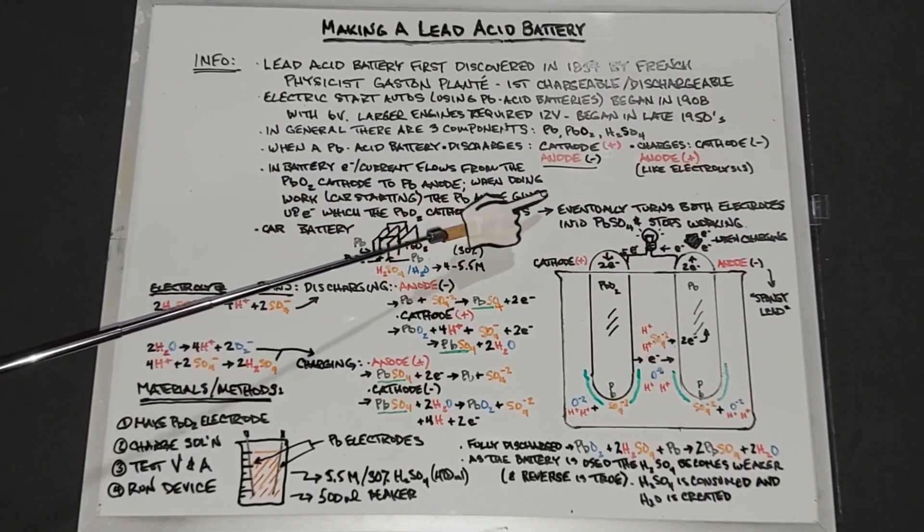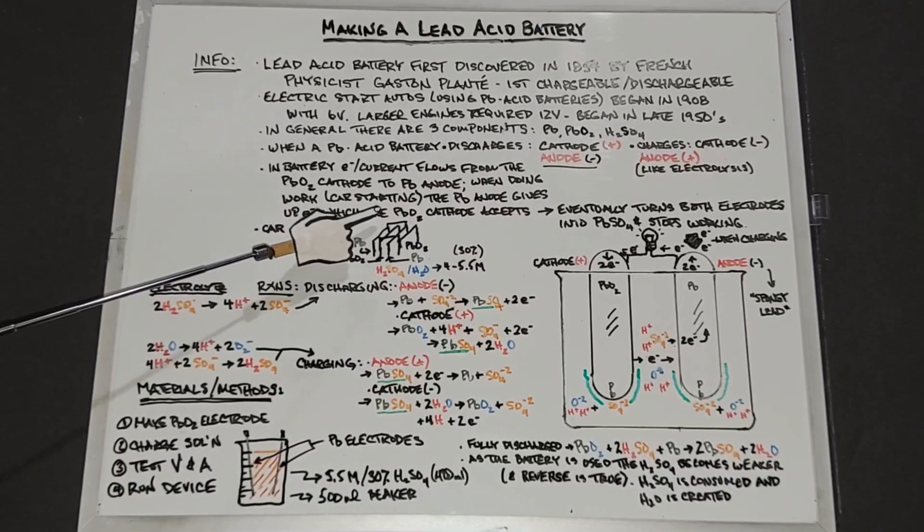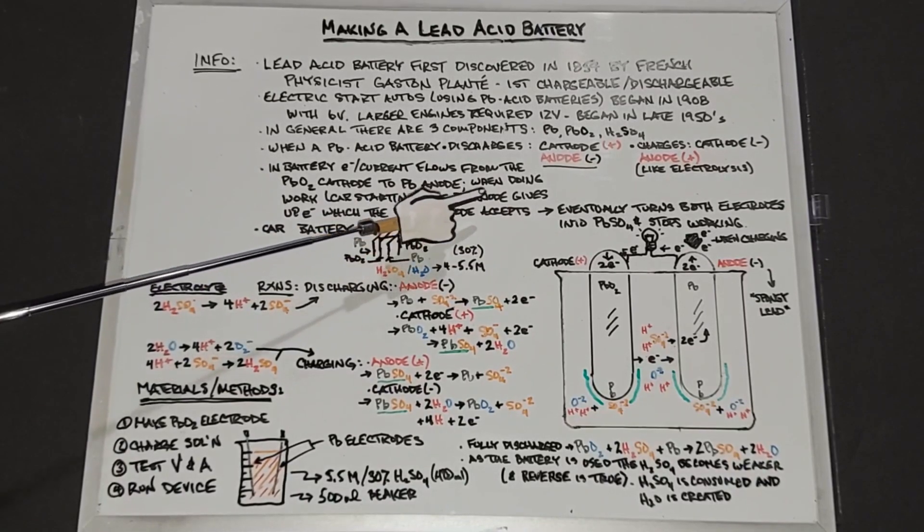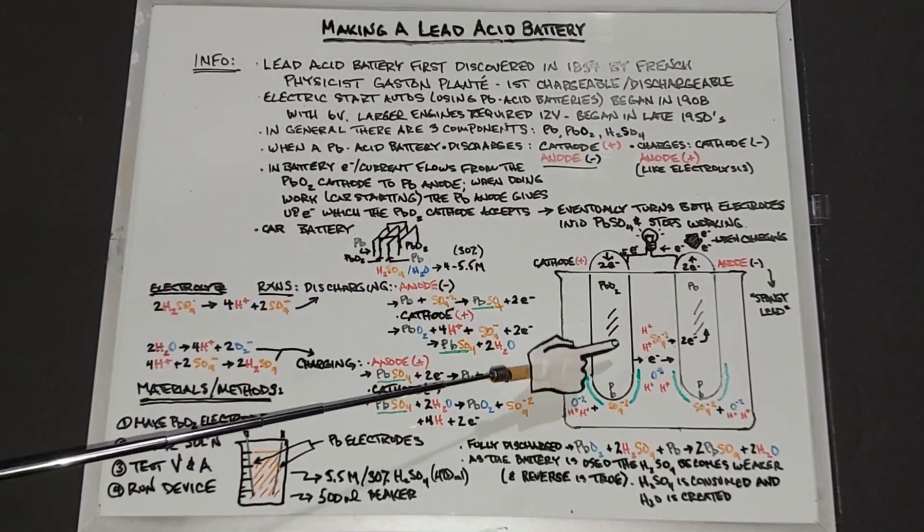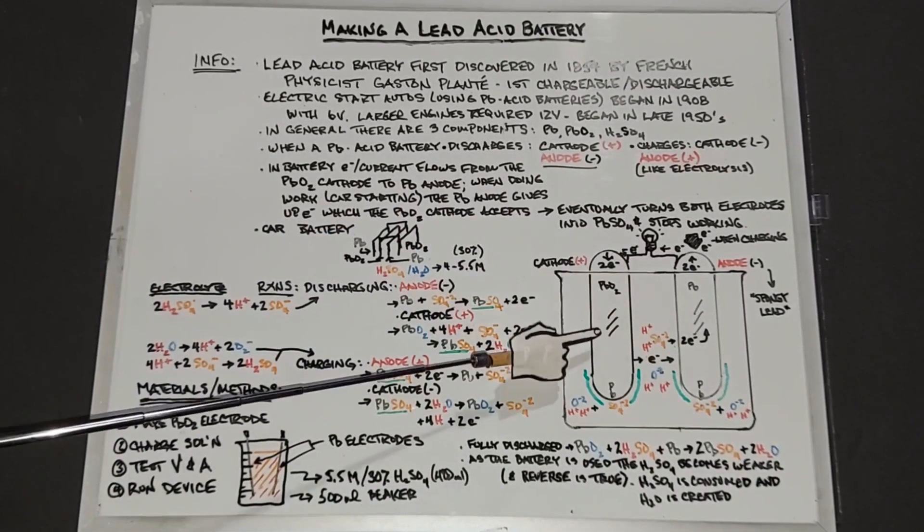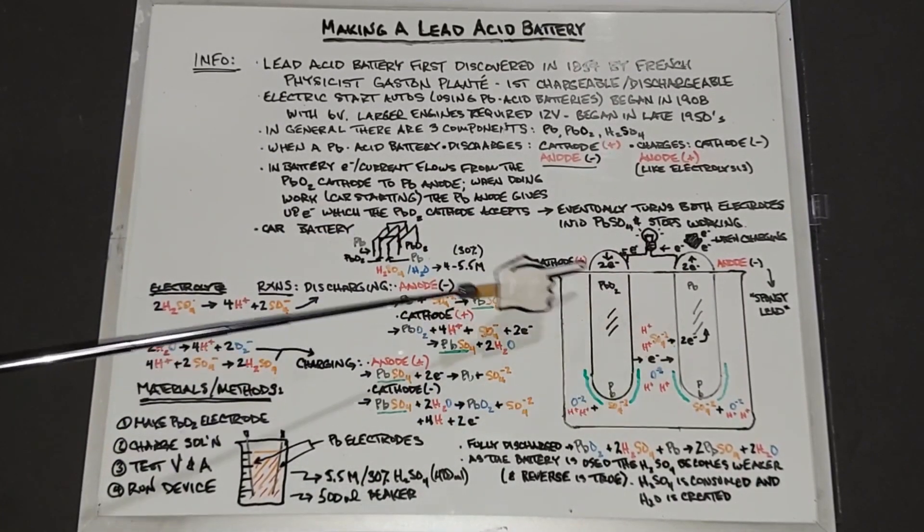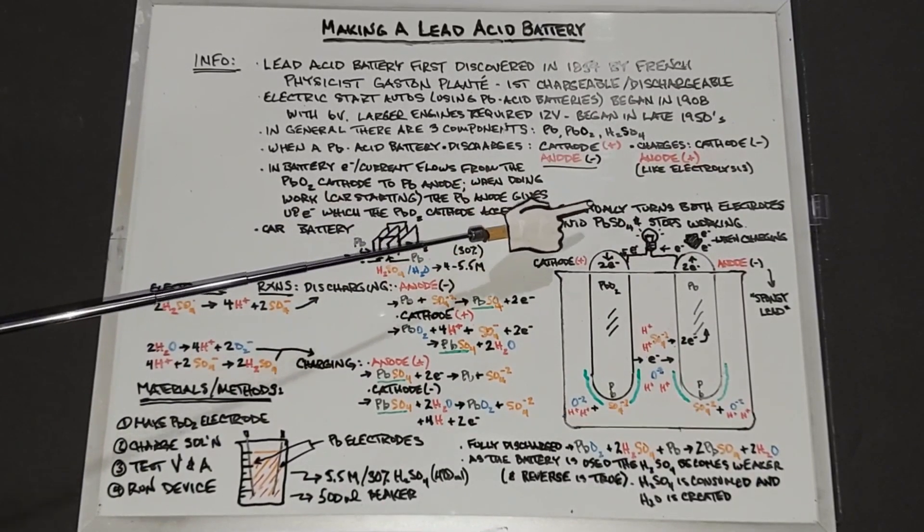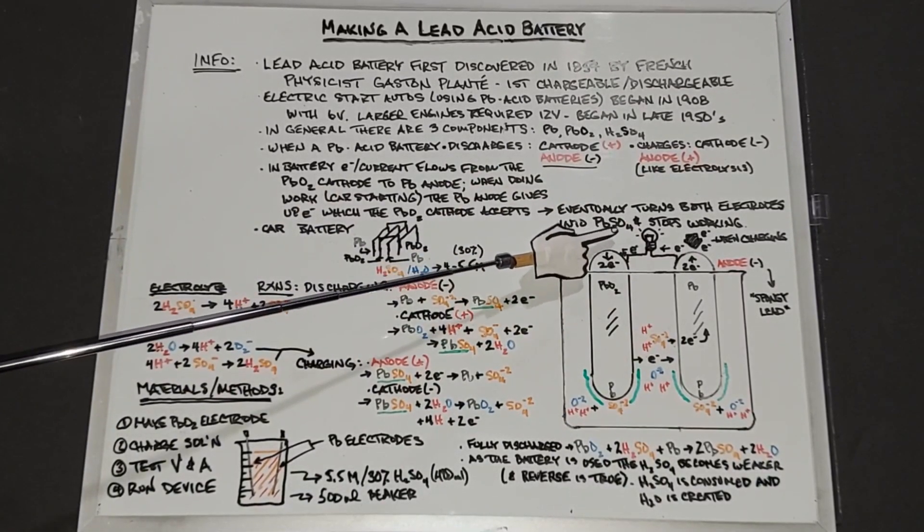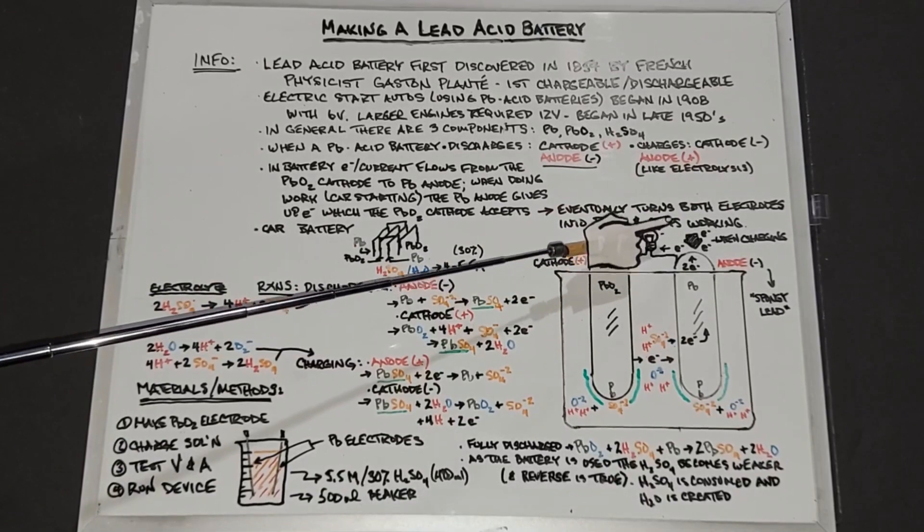Like starting a car or running a light bulb like I have here, the lead anode gives up the electrons which the lead dioxide cathode accepts. So the current is flowing in this direction counterclockwise. If this continues to go without charging it, it'll eventually turn both electrodes into lead sulfate and at that point your battery will stop working.